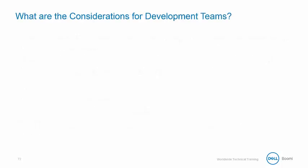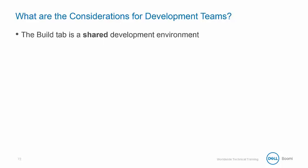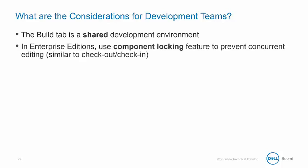When working in a development team, there are a number of considerations to be aware of so that you don't step on each other. It's important to understand the build tab is a shared development environment — everyone on the team is working on the latest and greatest source code version. In Enterprise Editions, there is a component locking feature similar to a check-in/check-out feature that helps to prevent concurrent editing. Without this, you could have two people editing the same process at the same time, and whoever saves last wins and overwrites the other's changes.